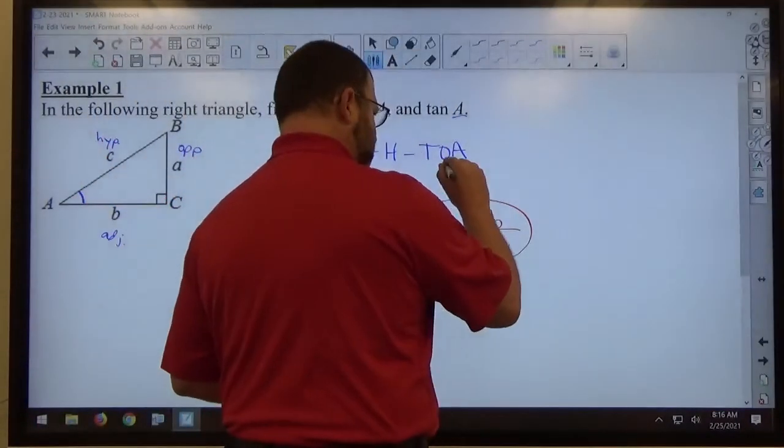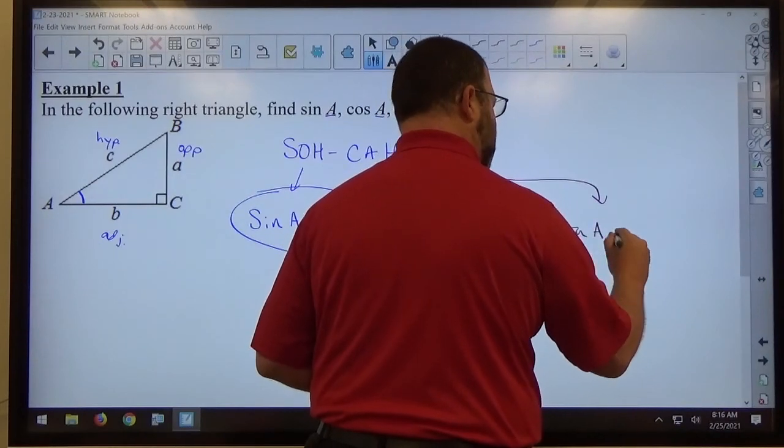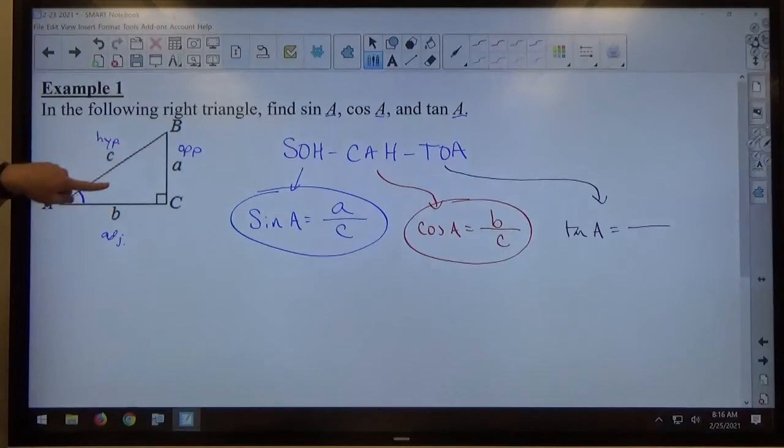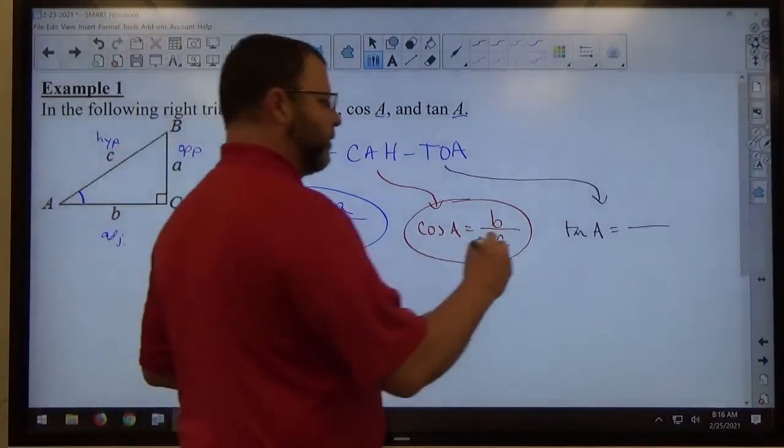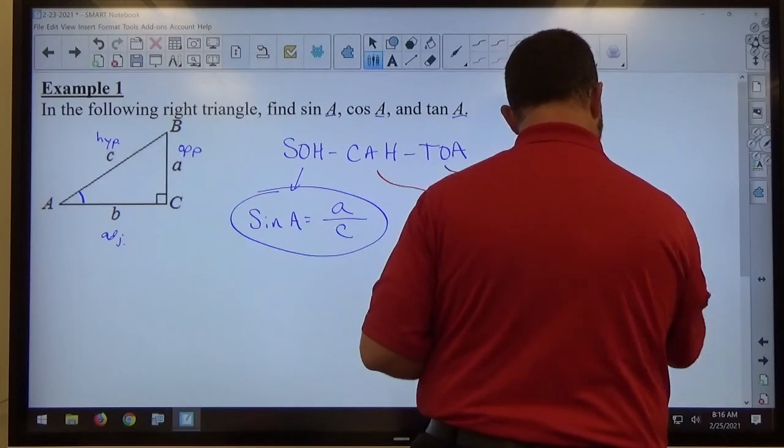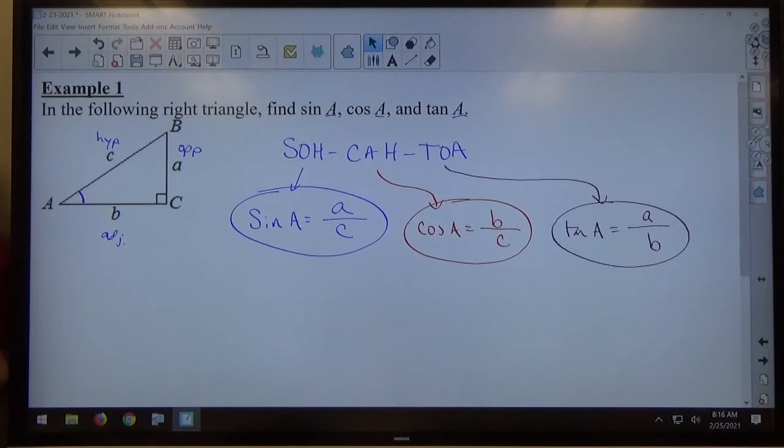And finally, the TOA part tells me about tangent. And tangent of the angle A we're working with equals the ratio of the opposite a over the adjacent b. And again, I can't make a over b any better than that. So for this particular problem, that's the best I can do.